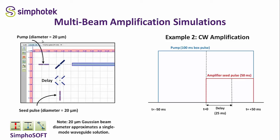Now we go to the second example: CW amplification. Here, both the pump and seed pulses are made longer and flat-topped. The pump is 100 milliseconds and the seed pulse is 50 milliseconds, with the center delayed 25 milliseconds compared to the center of the pump. Both the 100 millisecond pump and 50 millisecond seed pulses are longer than the relaxation times in the material, allowing the sample to come to equilibrium in a CW state.